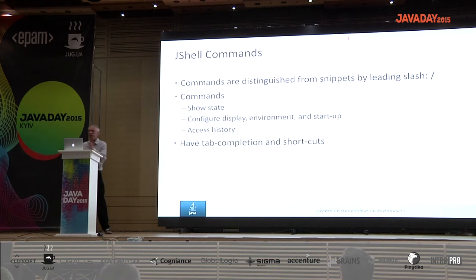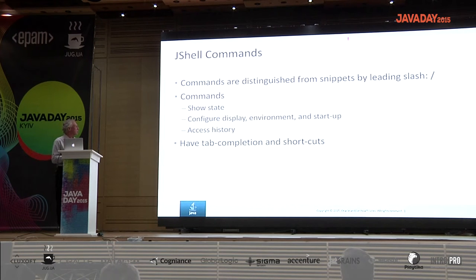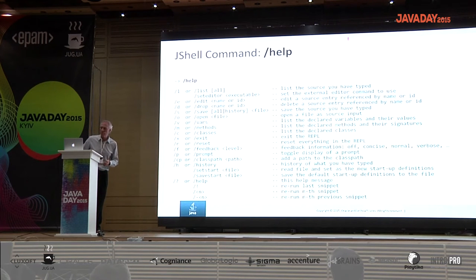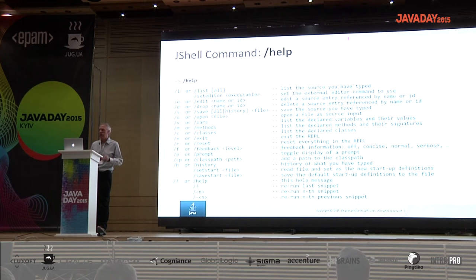Those were snippets — little pieces of Java code. There are also commands, and the way you tell them apart is commands have a leading slash. Commands show state, configure how you display things, what environment things are compiled in, startup, and access to the history of what you've typed. Commands are also tab-completable. You can get a list of all of them with slash-help, which shows the short form, full form including optional arguments, and a description.